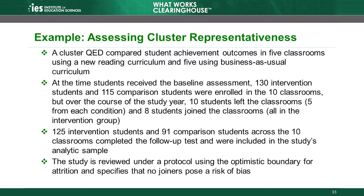Let's walk through an example of how to assess cluster representativeness. A cluster QED compared student achievement outcomes in 5 classrooms using a new reading curriculum and 5 using business-as-usual curriculum. At the time students received the baseline assessment, 130 intervention group students and 115 comparison group students were enrolled in the 10 classrooms. Over the course of the study year, 10 students left the classrooms — 5 from each condition — and 8 students joined the classrooms, all in the intervention group. 125 intervention group students and 91 comparison group students across the 10 classrooms completed the follow-up test and were included in the study's analytic sample. The study is reviewed under a protocol using the optimistic boundary for attrition and specifies that all joiners pose a risk of bias.